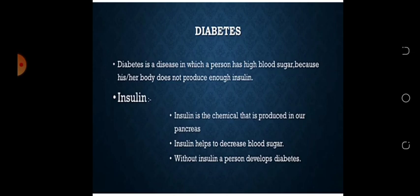Insulin ایک hormone ہے۔ Insulin is the chemical that is produced in our pancreas. ہمارا pancreas insulin produce کرتا ہے۔ Insulin کا کام یہ ہے کہ یہ blood sugar کو decrease کرتی ہے، یعنی ہماری body کے sugar level کو control اور maintain رکھتی ہے۔ Without insulin, a person develops diabetes.